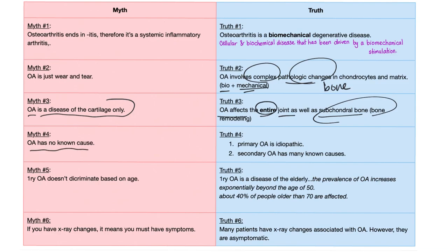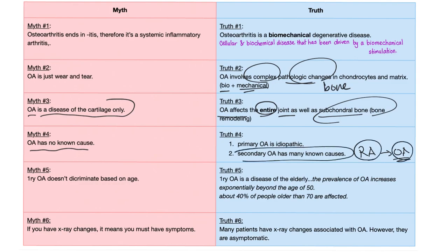Myth number four: osteoarthritis has no known cause. Primary osteoarthritis is idiopathic. Secondary osteoarthritis, on the other hand, has many known causes — for example, a patient who had rheumatoid arthritis for 35 years developing osteoarthritis has secondary osteoarthritis.